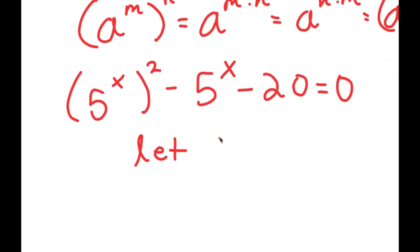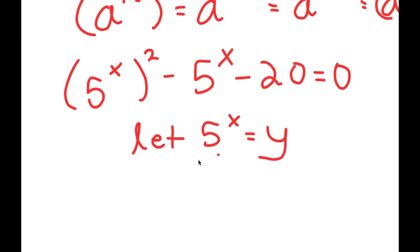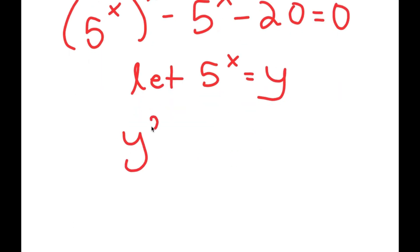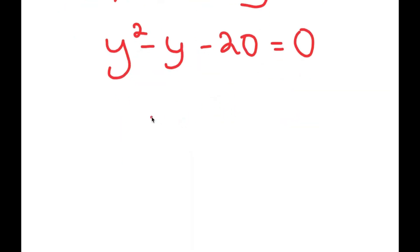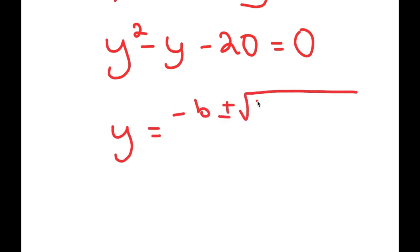Now I'm going to let 5 to the power of x equal to y. So I get y squared minus y minus 20 is equal to zero. To solve this, I'm going to be using the quadratic formula.